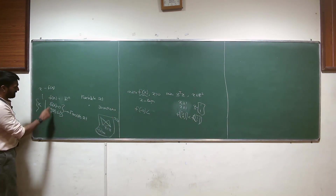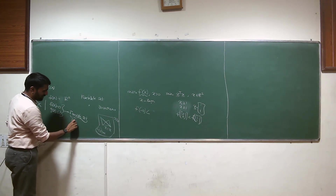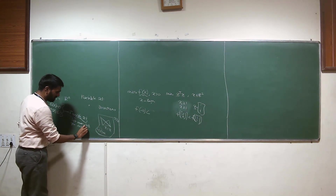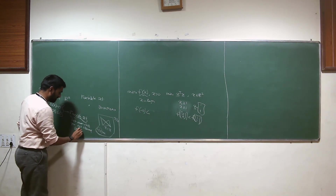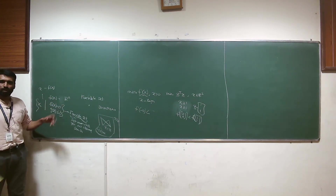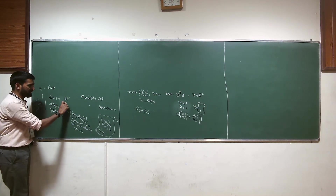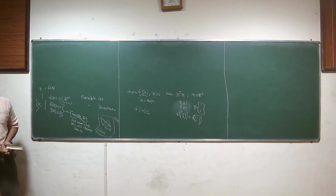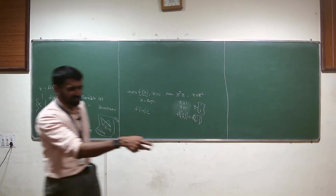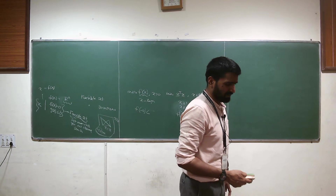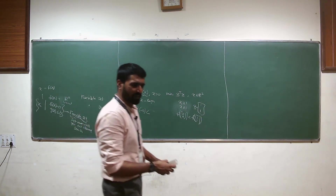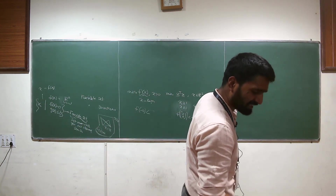A feasible set is simply a set over which you are allowed to search. You are not allowed to search outside this — that is a feasible set. If it is an unconstrained optimization problem, then all possible values of X, all of Rⁿ, is your feasible set. Otherwise, whatever satisfies these constraints. So you simply have to find the set of values of X that satisfy those constraints — and that is it.